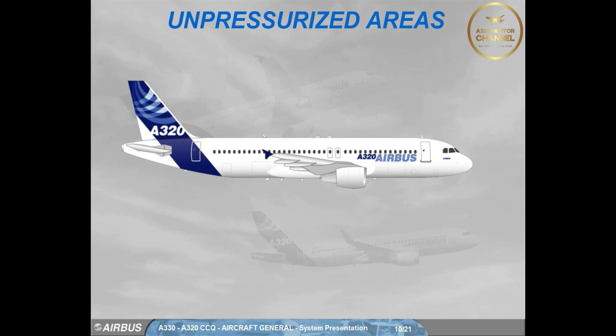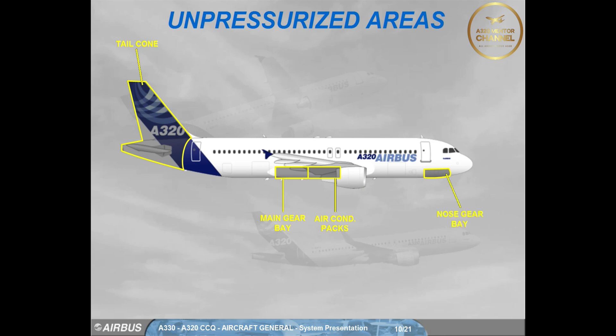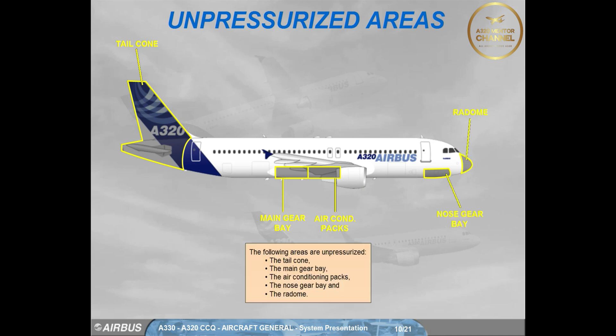Key external features include the tail cone, the main gear bay, the air-conditioning packs, the nose gear bay, and the radome.